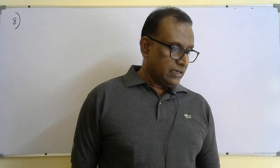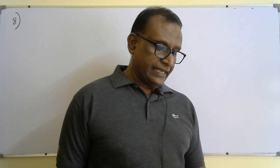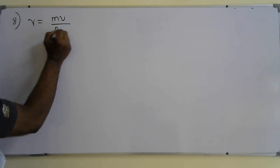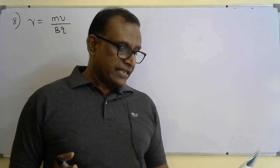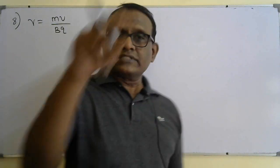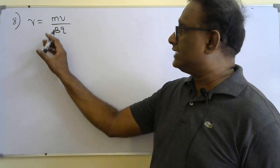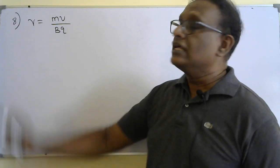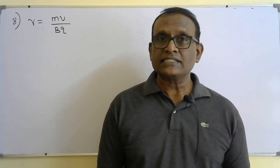Question number eight: in a cyclotron, the radius is given by R = mv/BQ. As the particle moves in an outward spiral, mass, magnetic field strength, and charge do not change. When R increases, the velocity of the particle increases. Correct answer: D.